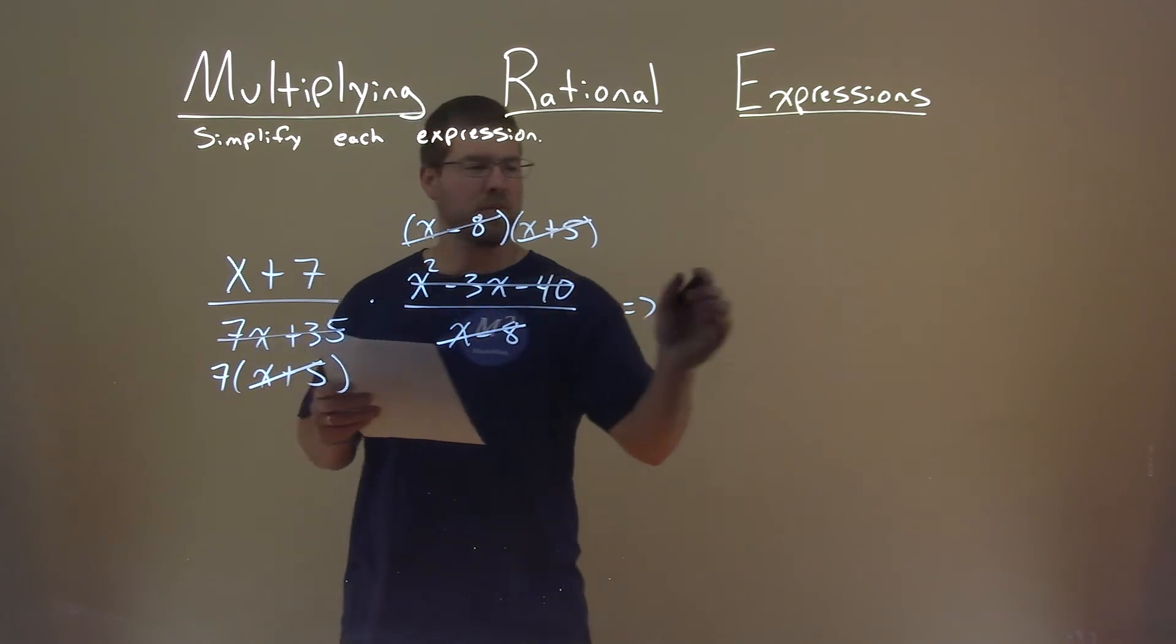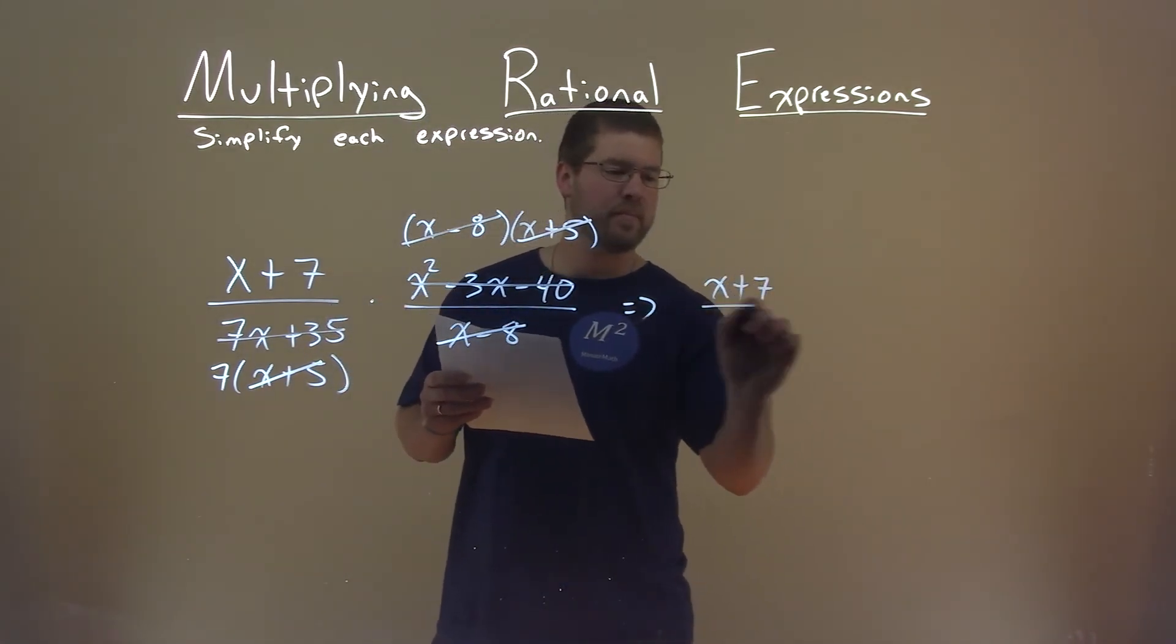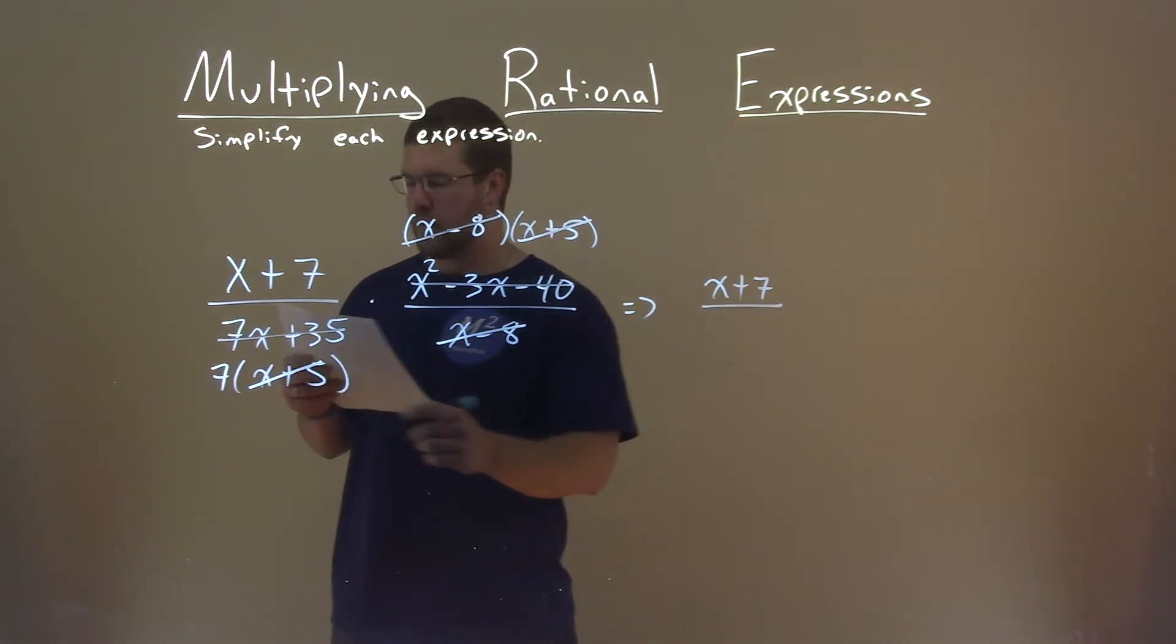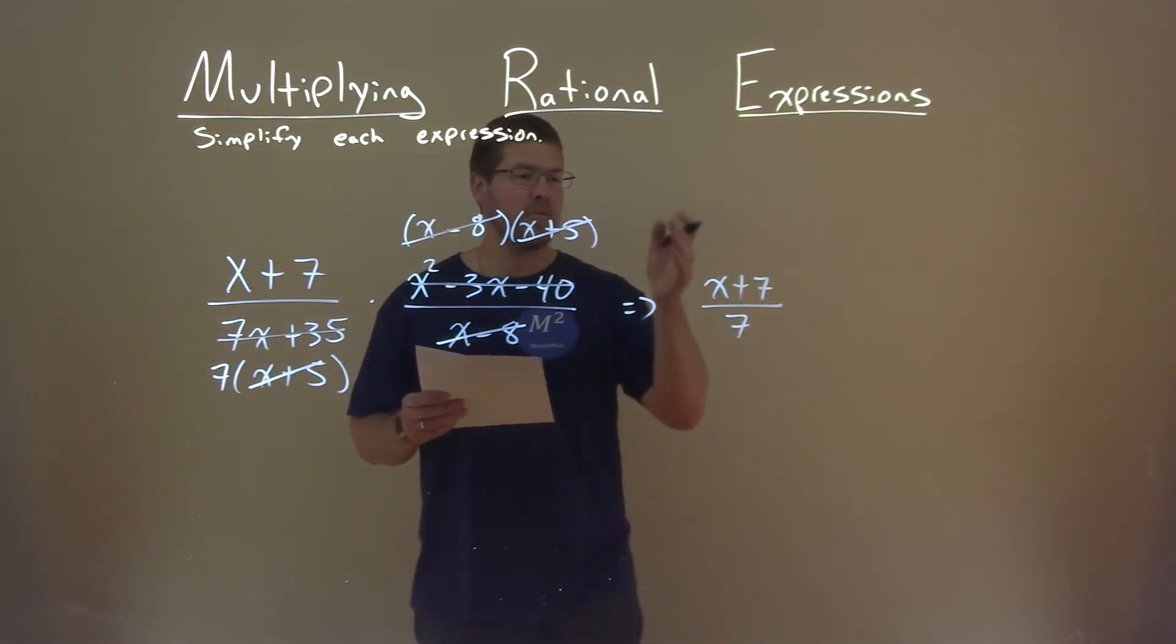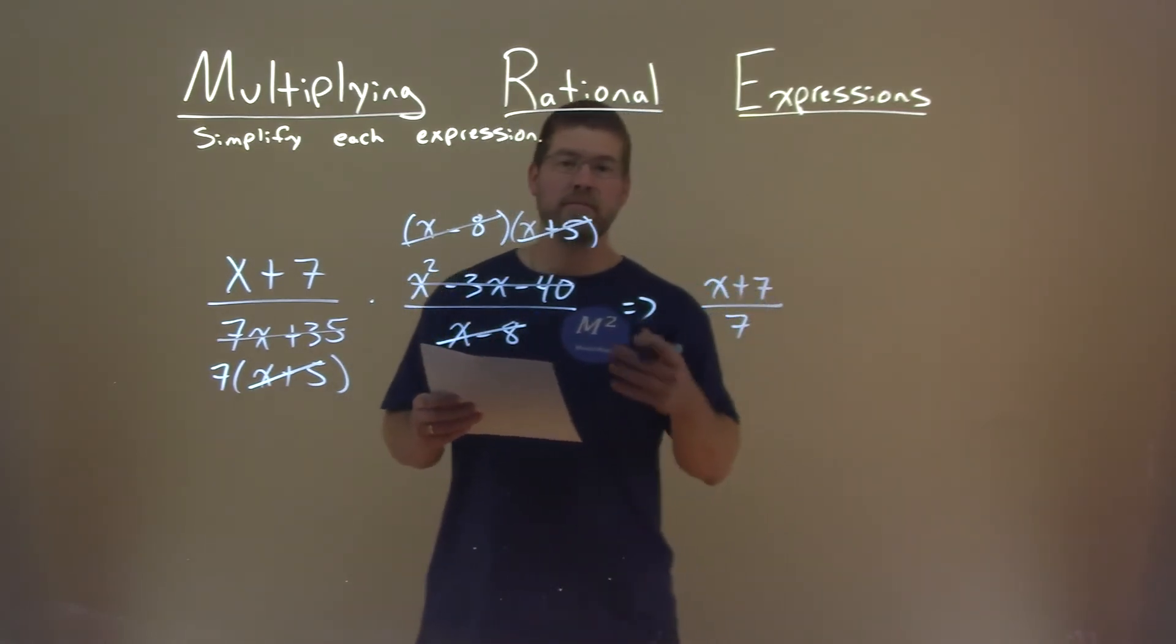So we bring over the x plus 7. We bring over that 7 right there. And that's it. x plus 7 divided by 7 is our final answer.